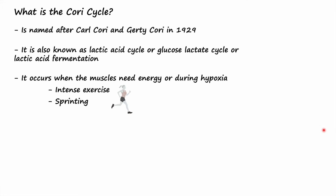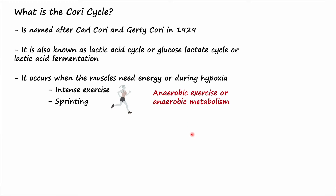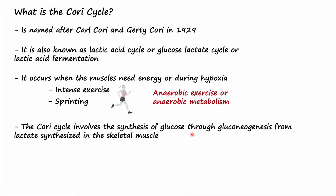The Cori cycle also occurs when muscle cells need energy, or during hypoxia when there is not enough oxygen — for instance during intense exercise or sprinting, which is basically running over a short distance. During this time, muscle cells may not receive oxygen fast enough to generate energy, and cells use anaerobic metabolism or anaerobic glycolysis to generate energy in the form of ATP.